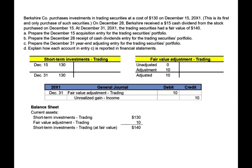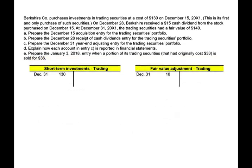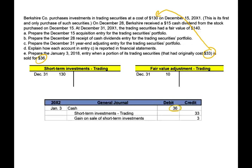On the balance sheet, short-term investments are recorded at cost $130, plus fair value adjustment of positive $10 — giving a portfolio value of $140. If it were a loss, it would reduce the $130. On the income statement under other revenue, you show dividend revenue of $15 and unrealized holding gain of $10. Now, if you sold $33 of the $130 for $36, you have a $3 realized gain. Entry: debit cash $36, credit short-term investments $33, credit realized gain on investment $3. Short-term investments now stand at $97.